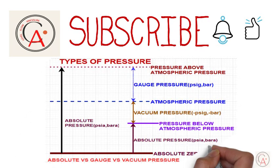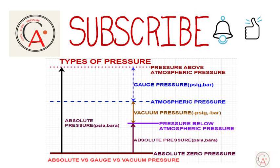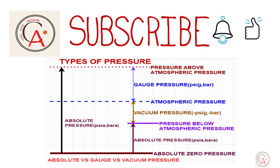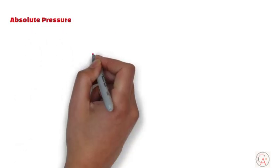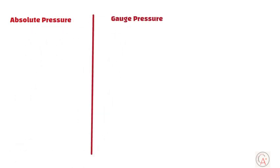Today's topic is an important one. We'll be diving into the fundamental differences between absolute pressure, gauge pressure, and vacuum pressure. These are essential concepts in the world of calibration, and understanding them can really level up your knowledge. Stick around until the end and I promise you'll leave with some valuable insights. Have you ever wondered how pressure is measured? Let's break it down into three types: absolute pressure, gauge pressure, and vacuum pressure.